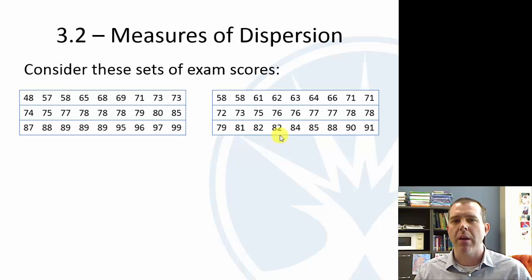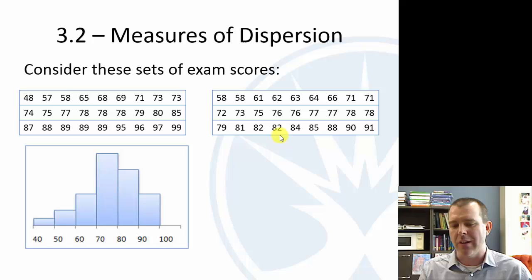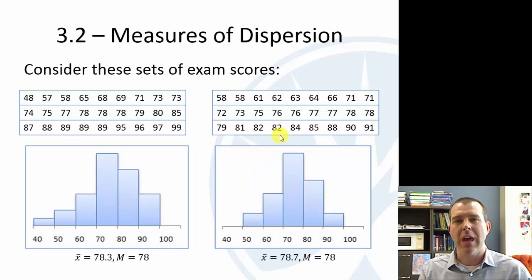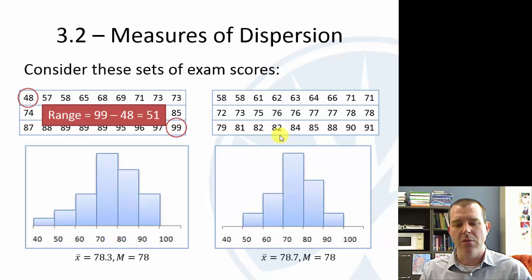So I have some theoretical sets of exam scores. If we look at these two, and we look at the lowest and highest observation, there are clearly some differences. Looking at their distribution shape, they look very similar. The mean is almost the same. The median is the same. But the first one looks a little more spread out. And if you look at that lowest and highest observation, it goes from 48 to 99. So the range, the range in statistics is an actual number. It's the highest minus the lowest. So the range would be 51.